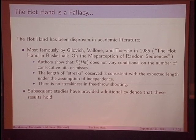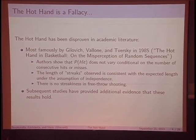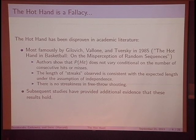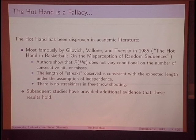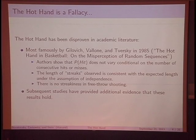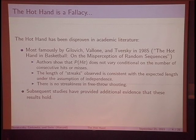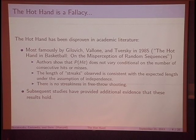In the academic literature, it's pretty much well-believed that the hot hand is a fallacy. The seminal paper on this was the Gilovich, Valona, Tversky paper, where the authors show that the probability of making your next shot, conditional on having made or missed your previous two, three, or four shots, is all about the same. They also show that streak lengths are typical of an independent process, there's no unexpected streakiness in free throw shooting, and studies looking at shots taken close together or the NBA long-distance shootout competition have found no convincing evidence that the hot hand exists.